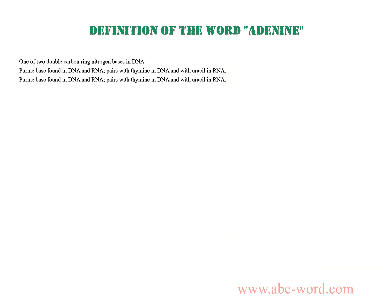Hello. After watching this video, you will find out what the word adenine means. One of two double carbon ring nitrogen bases in DNA. Purine base found in DNA and RNA, pairs with thymine in DNA and with uracil in RNA.